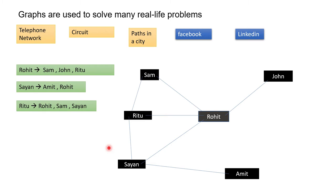Suppose there are some sites like Instagram or Twitter — there the relationship is maintained by following, like who is a follower of whom. Maybe I am a follower of some big person but it is not necessary that the big person is also following me, meaning there is some direction. Maybe Ritu is a follower of Rohit but Rohit is not a follower of Ritu — that also we can maintain using graph. Those kinds of graphs are called directed graphs, which we will come to later.